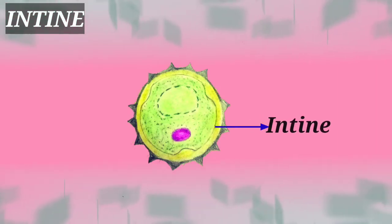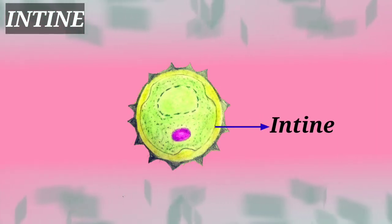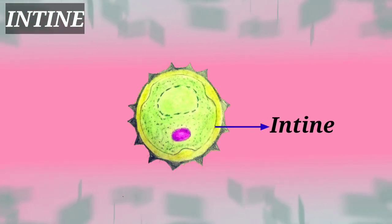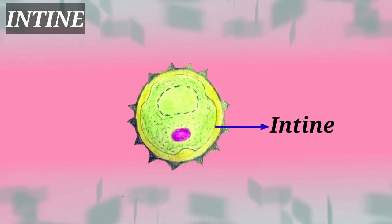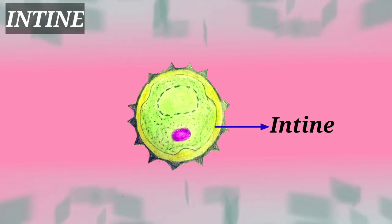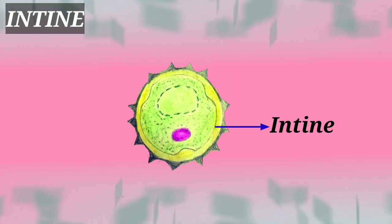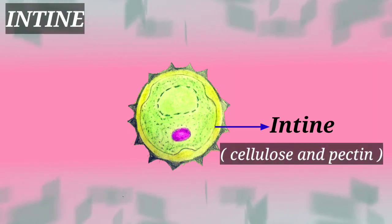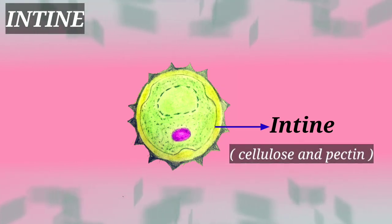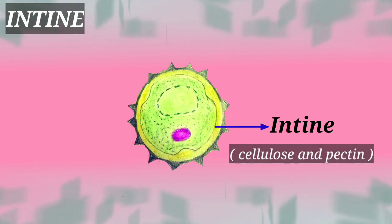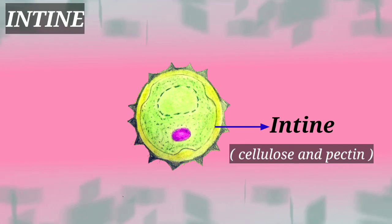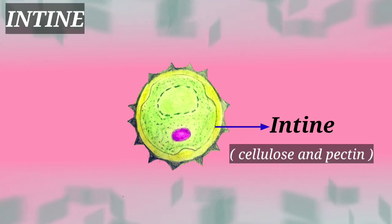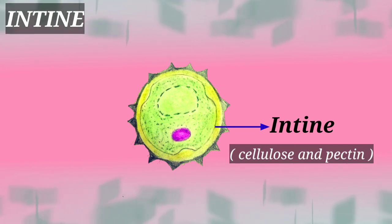Next, the entine wall. The entine layer is a thin and continuous layer. It is made up of cellulose and pectin, that is pectocellulose.